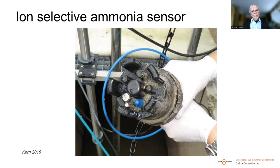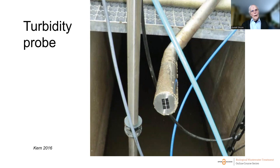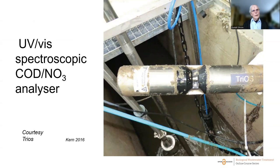An ammonia sensor is an ion-selective sensor containing interesting sensing elements, and it is considered an advanced sensor giving useful information. A turbidity probe can also provide important information about suspended solids in various parts of the process. A COD or nitrate analyzer is built on UV spectroscopic analysis to determine the amount of organic pollutants.